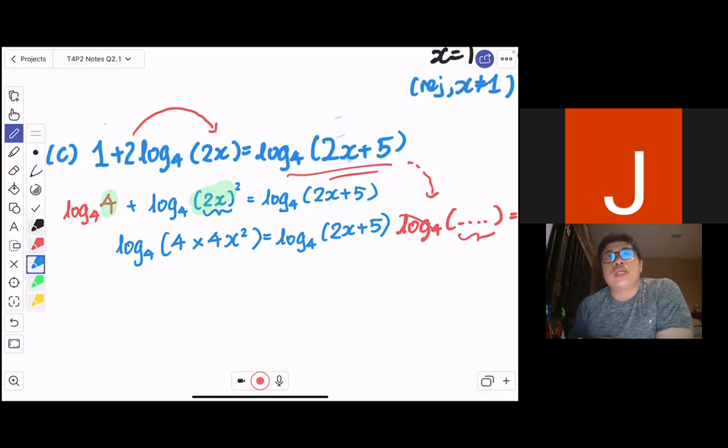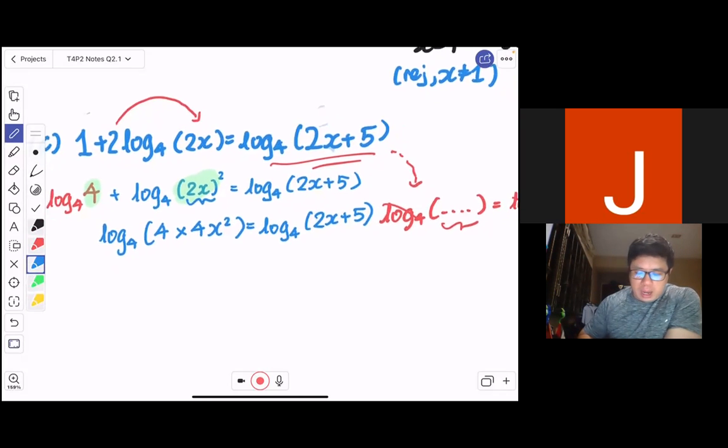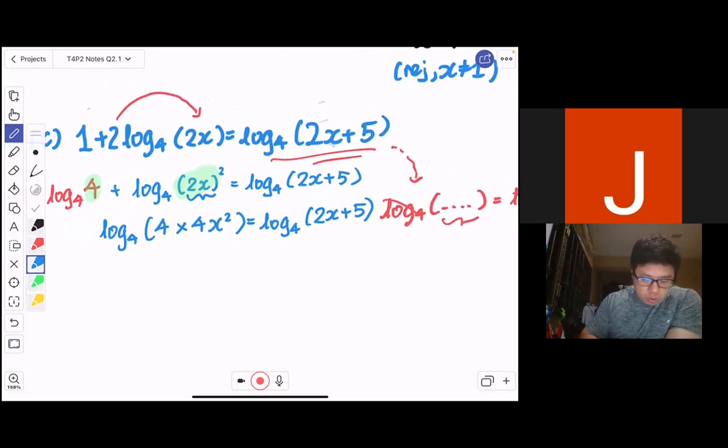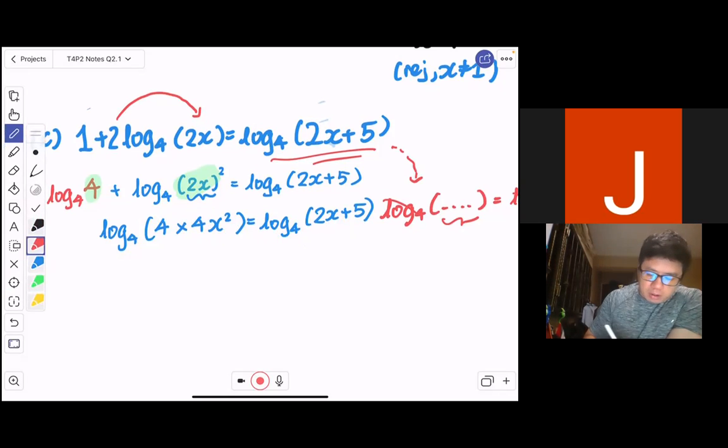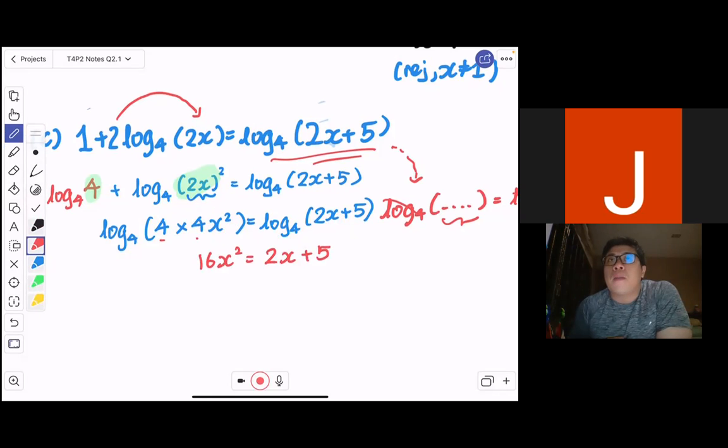So there you go. You see that I've achieved the state where I have two log equations equate to each other. No coefficients. So no worries at all. So from here, if log_a(m) = log_a(n), m will be equal to n. So I can cancel off the log. And 4 times 4 is 16. I can straight away remove the log on both sides, and I have 16x² = 2x + 5. I'll leave it to you to solve the rest.